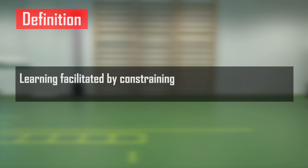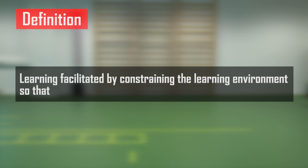In today's video we're going to talk about errorless learning and how it is used as an implicit technique in motor learning when working with children. The definition of errorless learning is learning facilitated by constraining the learning environment so that very few errors occur.